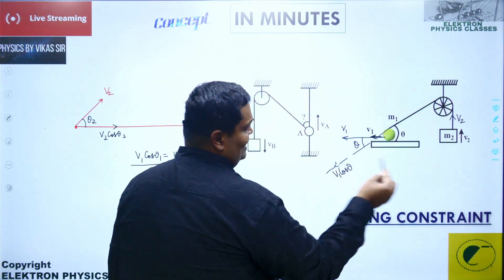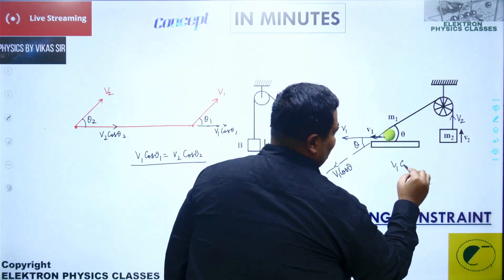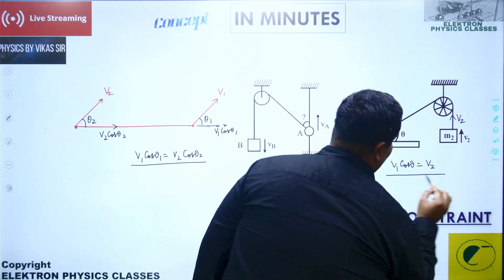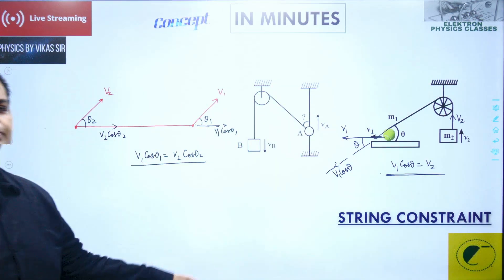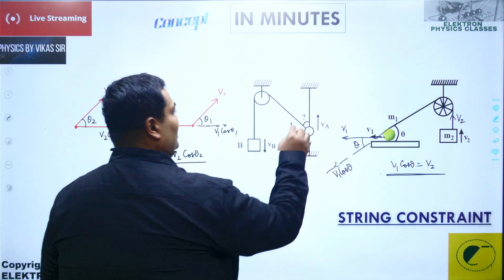That generates to me that v1 cos theta should be equal to v2. That's the relation between them. And similarly, in this particular question, the question is demanding what is the value for this angle theta.